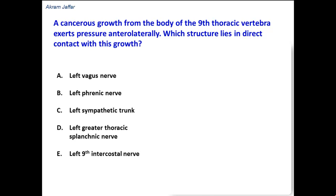A cancerous growth from the body of the ninth thoracic vertebra exerts pressure anterolaterally. Which structure lies in direct contact with this growth? In other words, which of these structures lies in direct contact with the anterolateral surface of the ninth thoracic vertebra?